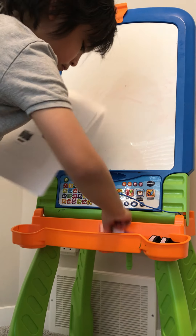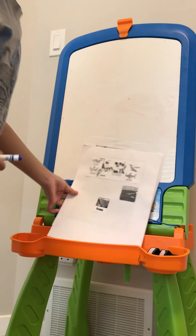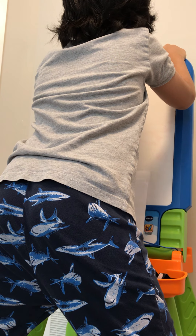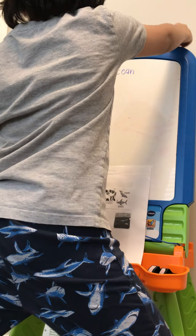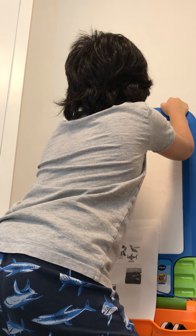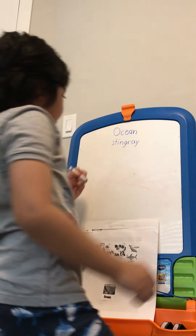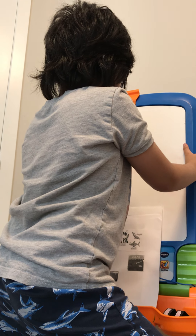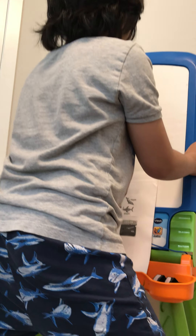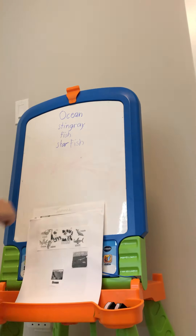So who lives there? Ocean — there are lots of animals. Stingray. Fish? Yes, correct. This is like a compound word that I learned from school: starfish.